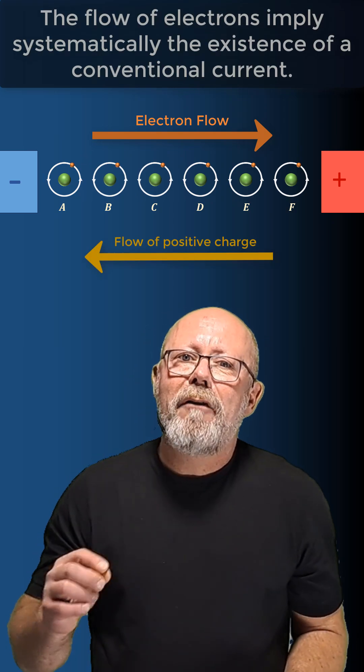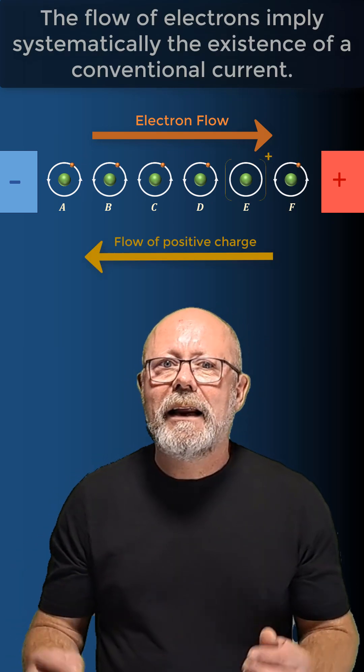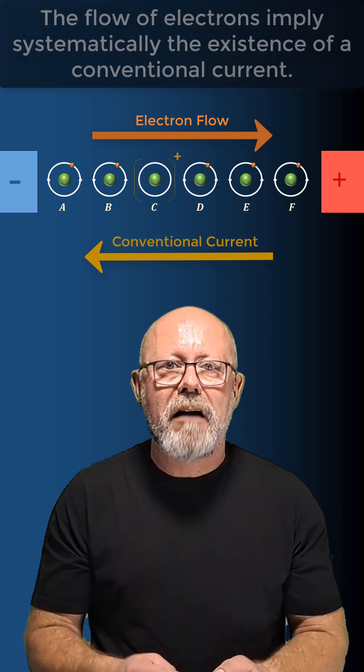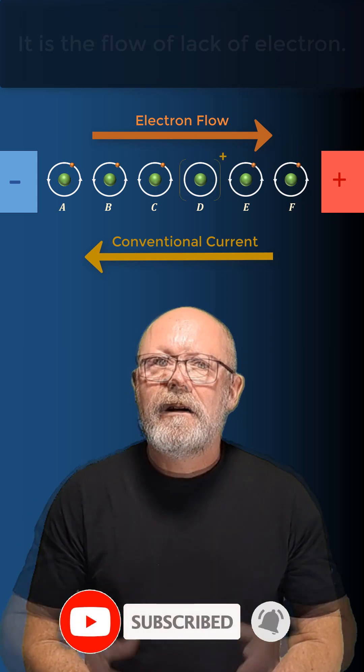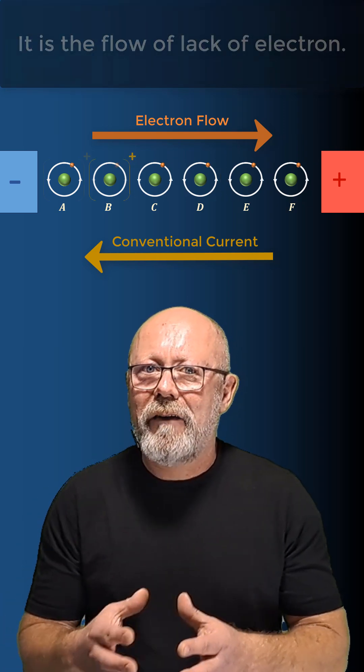You can see that the flow of electrons implies systematically the existence of a conventional current. From that, you can even give a physical meaning to the conventional current. It is a flow of lack of electrons.